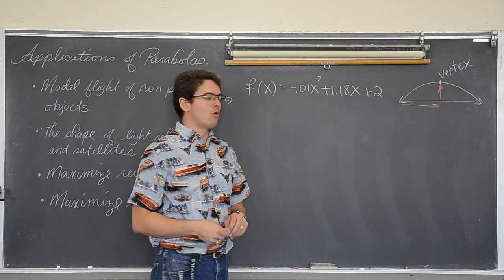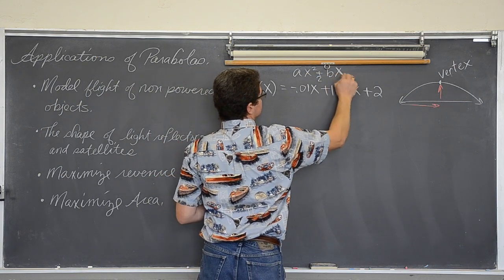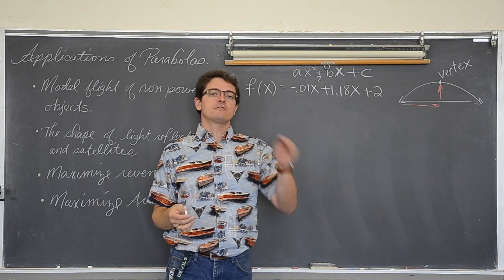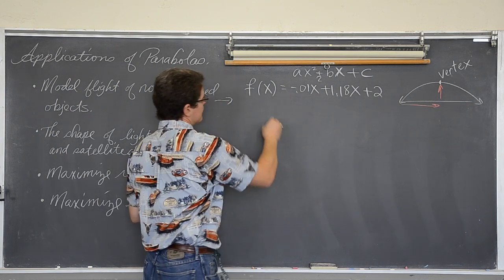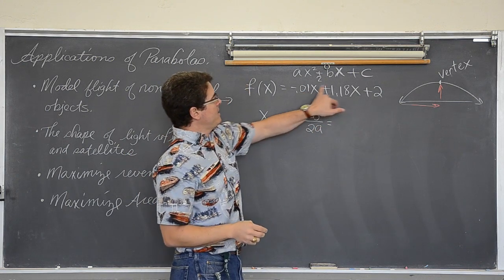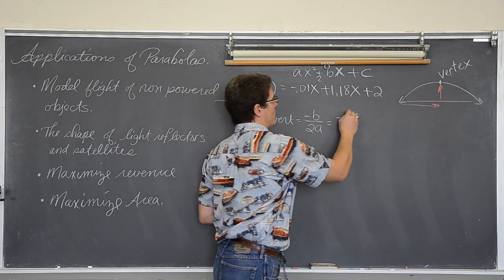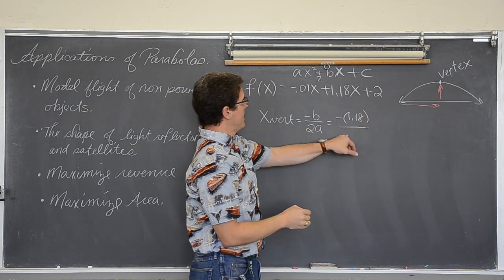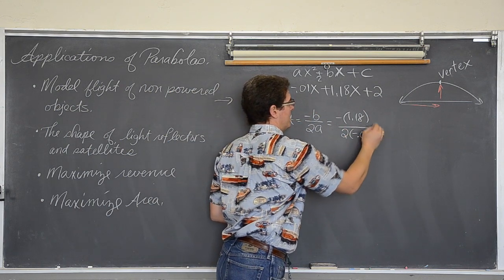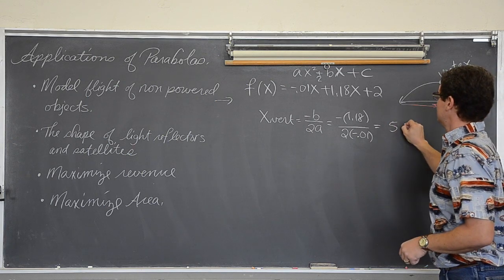That vertex is going to represent the highest that object ever gets, and horizontally how far the object will travel before it reaches its maximum height. This parabola is already in general form: ax² + bx + c. If you want the x of the vertex without using a graphing calculator, you find it using the formula -b over 2a. So the x of the vertex is the opposite of b, which is 1.18, divided by 2a, where a is -0.01. So 2 times -0.01. When you put this into your calculator, you get a value of 59 units.